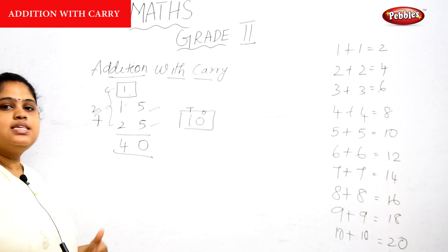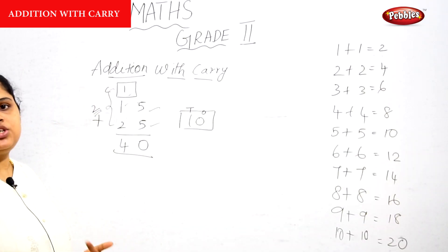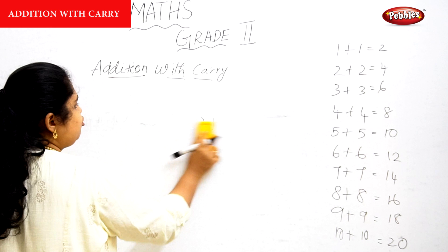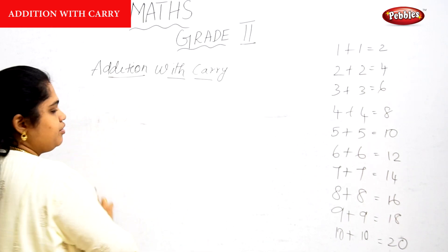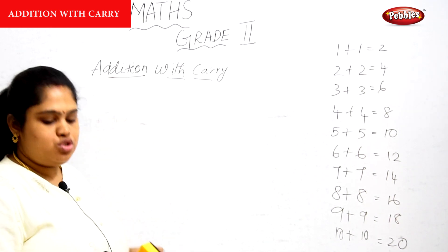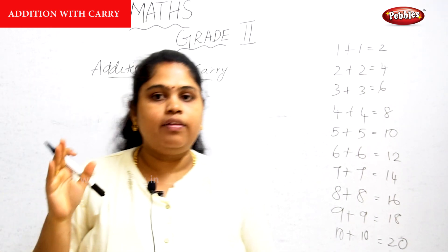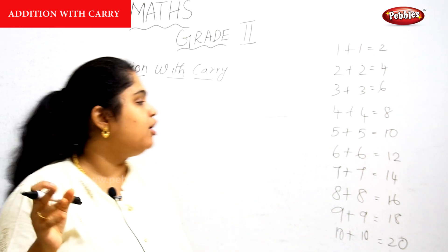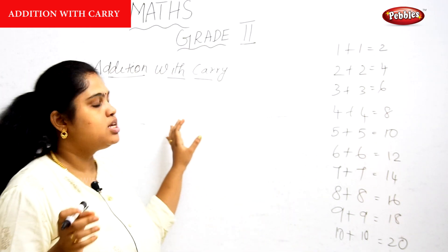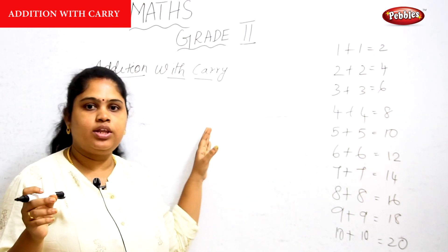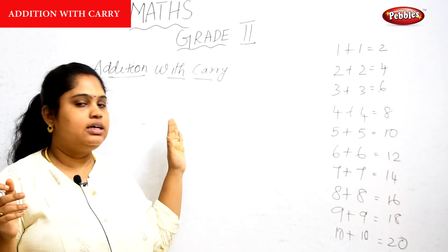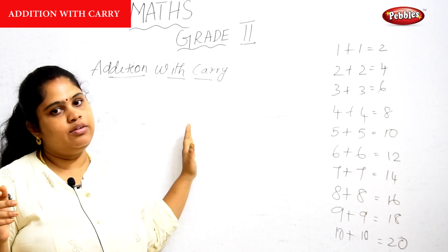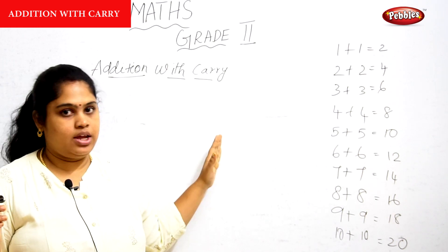Let's see some more additions with carry. You have to be very clear — you should draw the carry box on the upper side, and also draw a box on the left side.